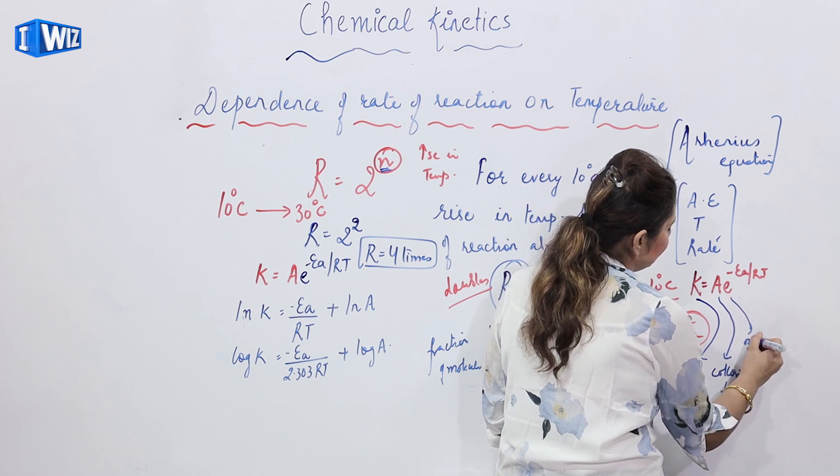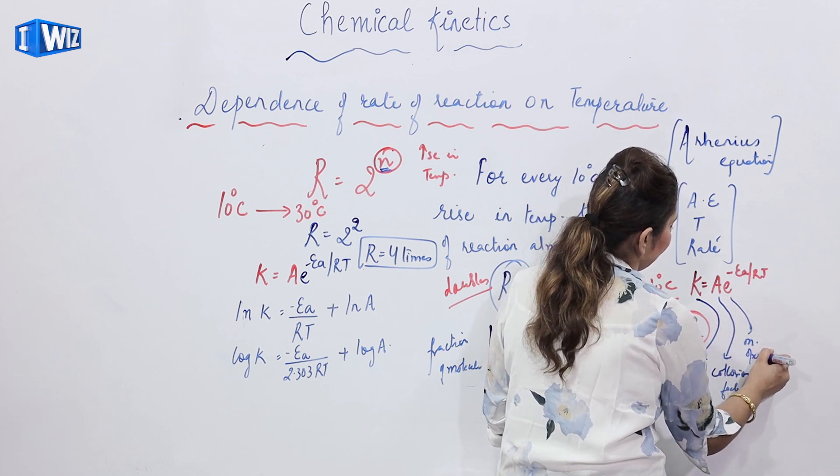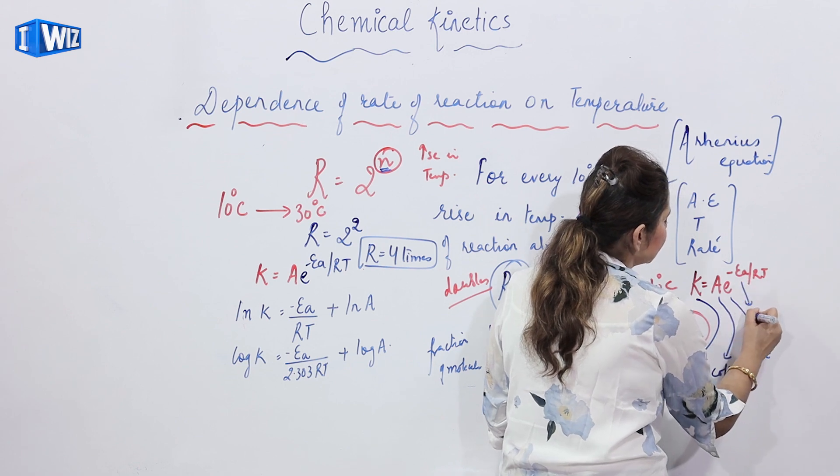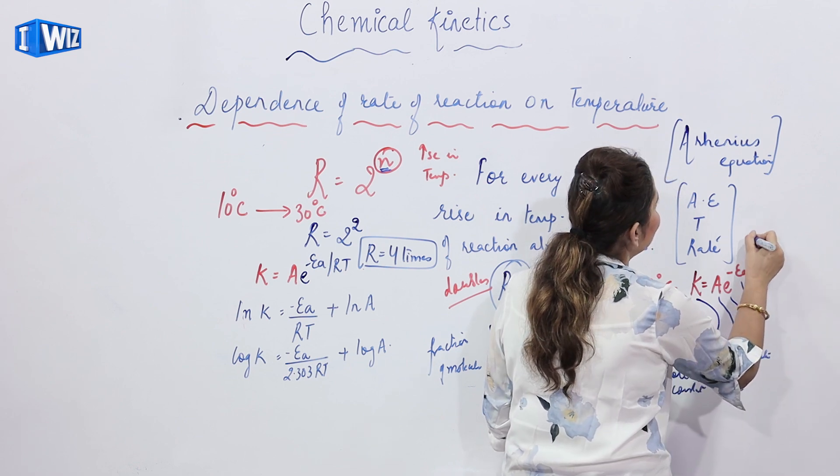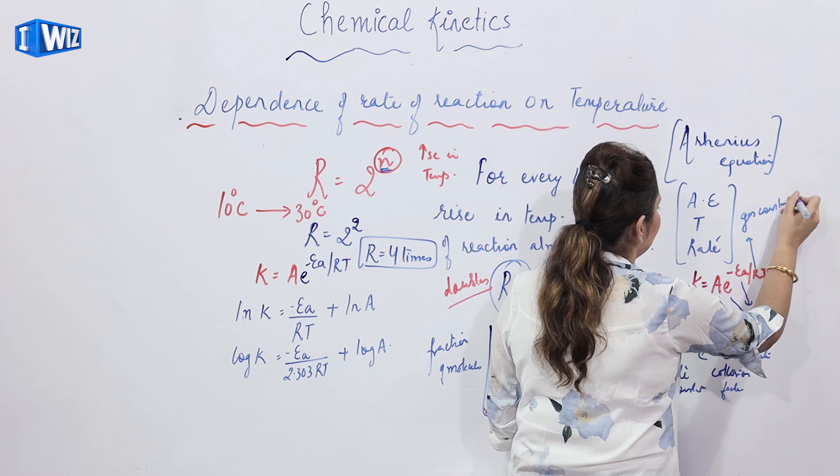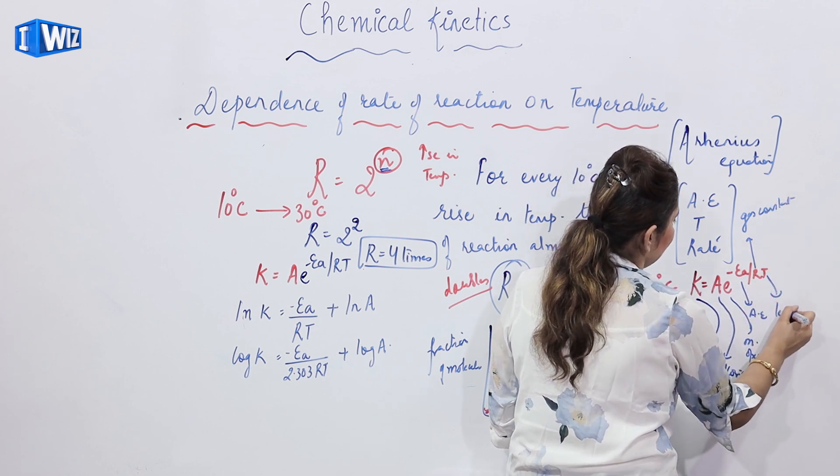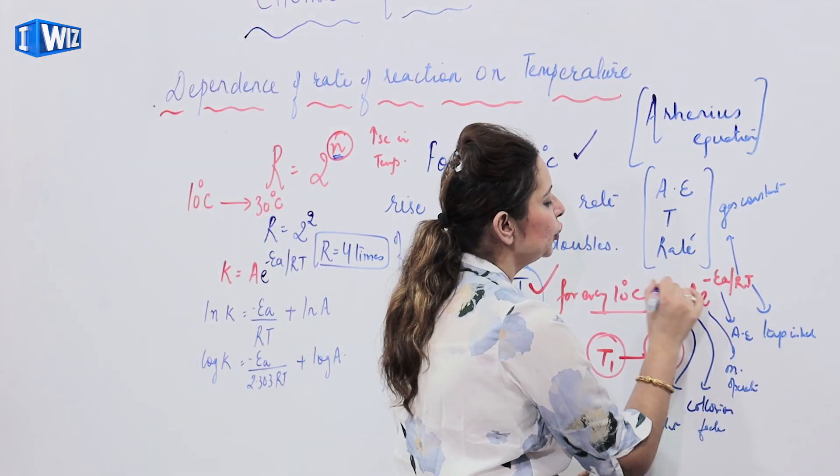E it is a mathematical operation or operator you can write. EA is the activation energy. R we know is a gas constant. And T is the temperature in Kelvin.